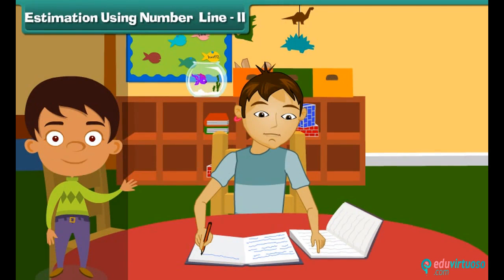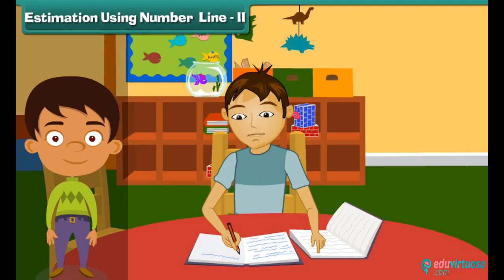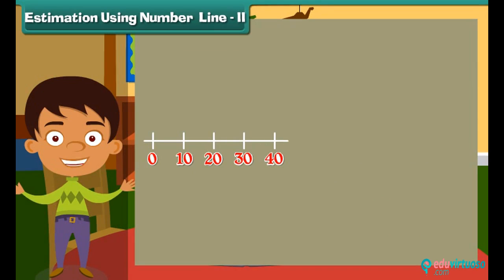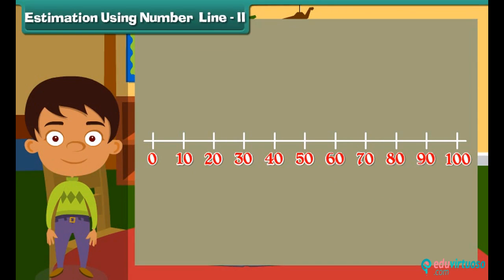Estimation using number line. Let us now consider a bigger number line from 0 to 100. Can you guess the position of number 20 on this line? It will be near 0 or towards 100? Yes. It will be near 0.